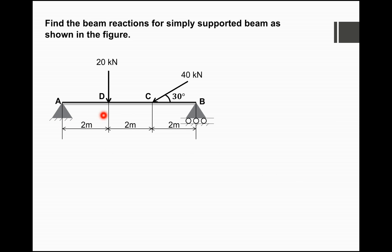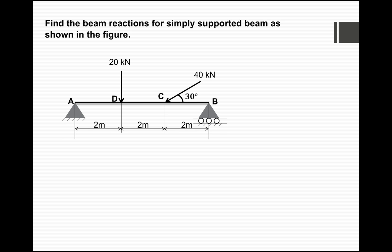The beam is hinged at A, so this is the hinge support, and at B it is the roller support. Because of the inclined load, the reaction at the hinge support is also inclined. At the roller support the reaction is Rb, perpendicular to the sliding of the roller, whereas at point A, because of the inclined 40 kN load, there will be a reaction Ra making an angle of alpha with the horizontal.